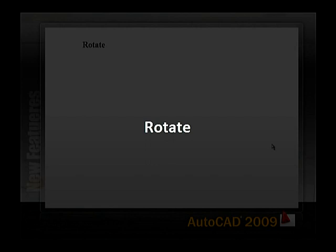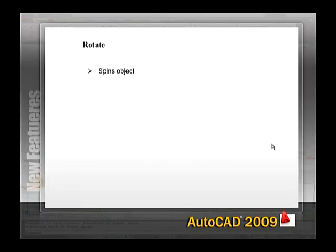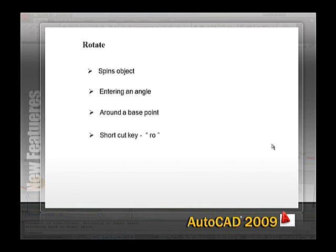Rotate. The Rotate option spins objects around a base point, either rotating the original or making a copy and leaving the original in place. Specify the amount of rotation by entering an angle or using reference geometry. The shortcut key used to type in the command line is RO.